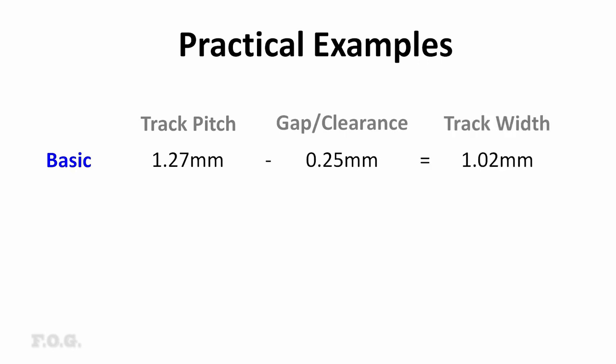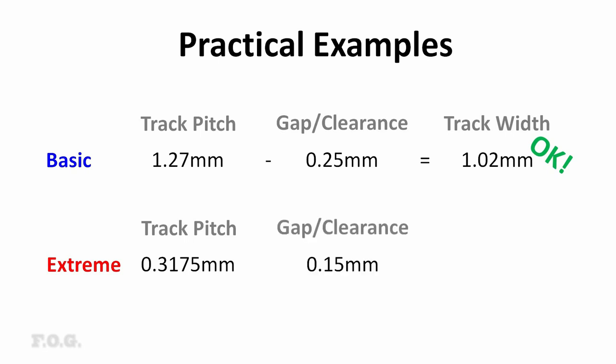So something conservative first, let's go with a 1.27 millimeter track pitch with a 0.25 millimeter gap width between each track. And that's going to give us a track width of 1.02 millimeters. That passes all of the rules. And of course, no problem to etch something like that. Next up, let's try the extreme side of things. Let's go with a 0.3175 millimeter track pitch and a 0.15 millimeter gap. And that's going to give us a track width of 0.1675 millimeters. Again, passes all of the rules. And what we have seen so far shows we can reliably etch this too.